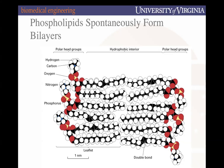If you look at some of the fatty acid tails, you can appreciate that they're not straight lines — they usually have kinks in them. That kinking is going to be pretty critical, and we'll talk about why that happens. Before moving further, are there any questions?